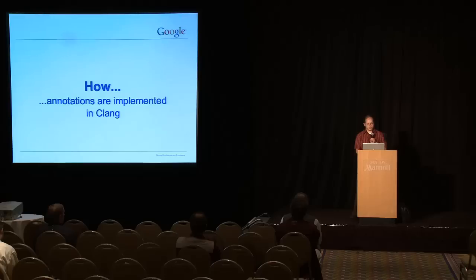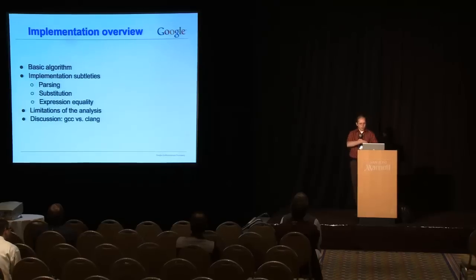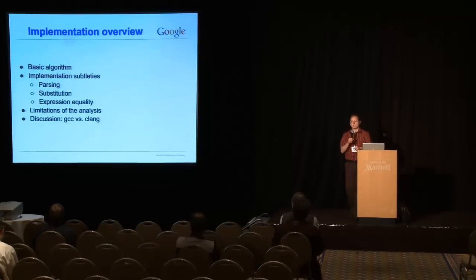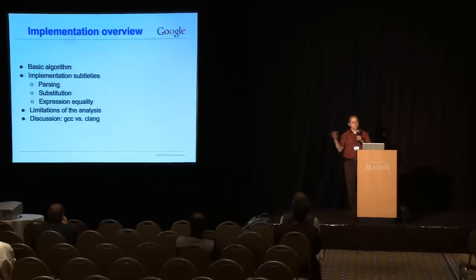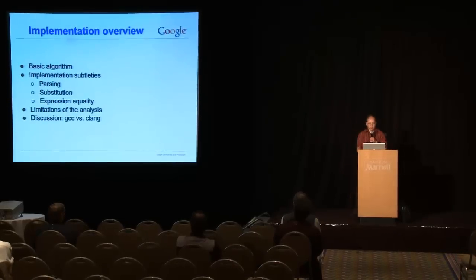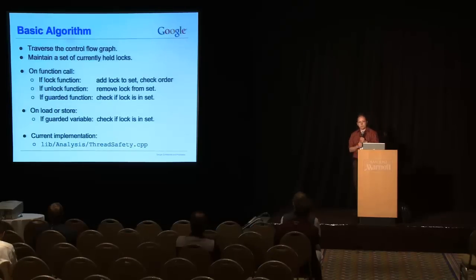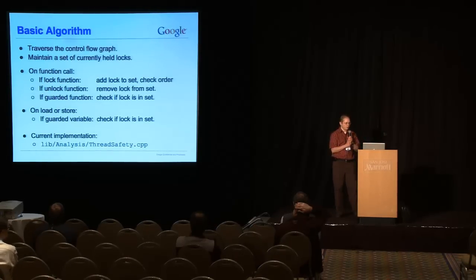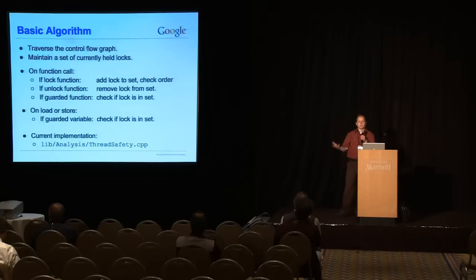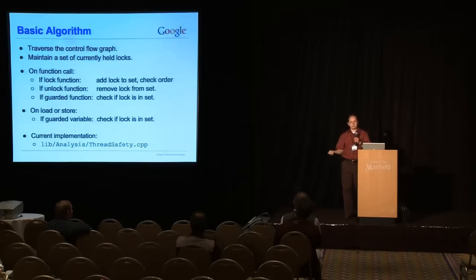I'll describe briefly how they're implemented within Clang. So, I'm going to go over the basic algorithm, which is really quite straightforward. This is nothing fancy. And then, I'll talk about a few of the implementation subtleties. And I'll talk about some limitations and give you a brief flavor of our experiences working with both Clang and GCC on the implementation. So, the basic algorithm is we grab a control flow graph, and we traverse the control flow graph, and we always maintain the set of currently held locks. And we're just modifying the set. If you call a function and the function has a lock attribute, then we add something to the set. If you call an unlock function and remove it from the set, whenever you do a load or a store, you check to see whether the appropriate lock is in the set.